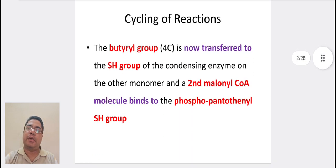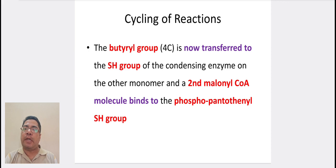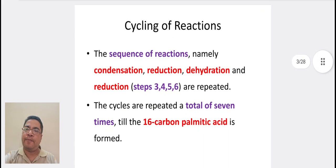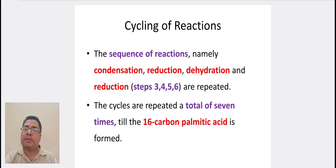Cycling of reactions. The butyryl group, or the four-carbon-containing group, is now transferred to the SH group of the condensing enzyme on the other monomer, and a second malonyl molecule binds to the phosphopantetheinyl SH group. The sequence of reactions — namely condensation, reduction, dehydration, and reduction, i.e. steps 3, 4, 5, and 6 — are repeated. The cycles are repeated a total of 7 times, till the 16-carbon palmitic acid is formed.